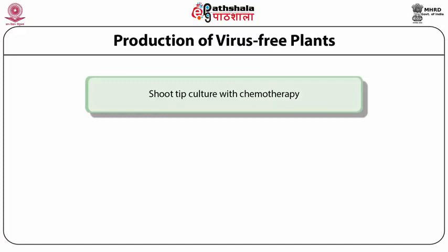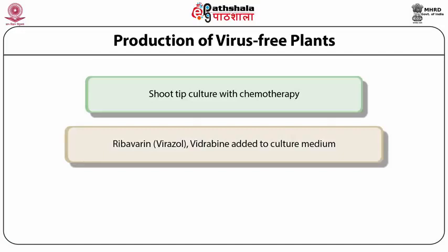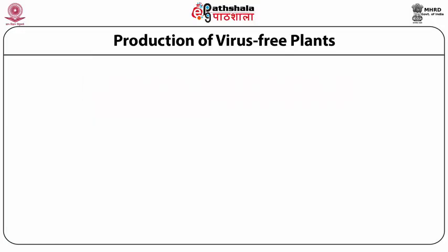The procedure followed is that mother plants are given thermotherapy, from which nodal segments are taken and cultured. When shoots develop from these nodal segments, shoot tip cultures are raised from these aseptic shoots to raise the virus-free plants. As for chemotherapy — while virucidal compounds are not practical in the field — in culture, shoot tip culture has been combined with chemotherapy by adding virucidal compounds such as virazole or ribavirin to the culture media.